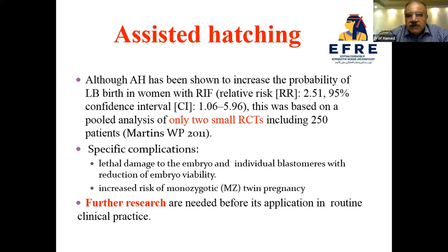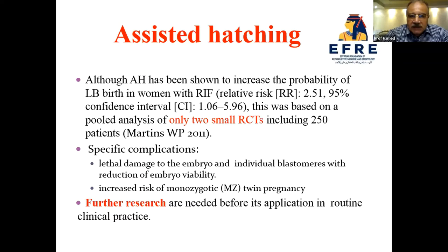Although assisted hatching has been shown to increase the probability of live birth in women with RIF, this was based on a pooled analysis of two small randomized controlled trials including 250 patients. There are specific complications, including lethal damage to the embryo and individual blastomeres with reduction of embryo viability, and increased risk of monozygotic twin pregnancy. Further research is needed before routine clinical application.